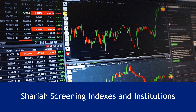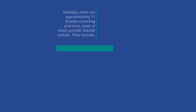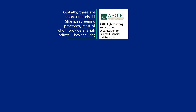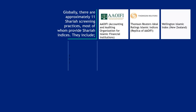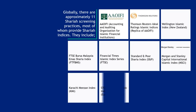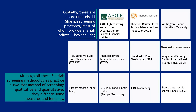Shariah Screening Indexes and Institutions. Globally, there are approximately 11 Shariah screening practices, most of whom provide Shariah Screening Indexes. Although all these Shariah Screening Methodologies practice a two-tier method of screening — qualitative and quantitative — they differ in some measures and leniency.